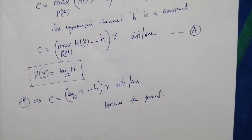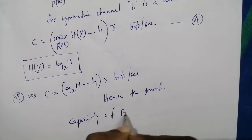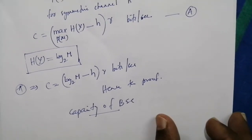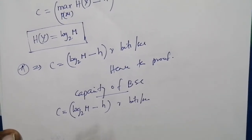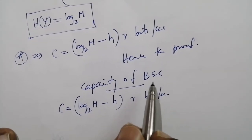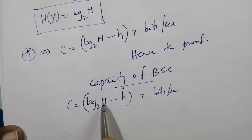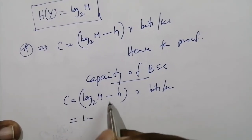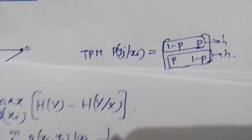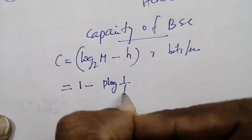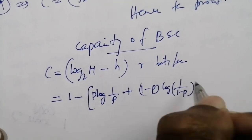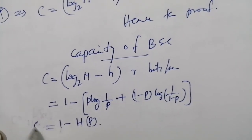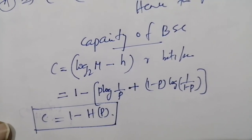Now we will calculate the capacity of the binary symmetric channel. We know that C equals log2(m) minus h, times r bits per second. For the binary symmetric channel there are two output symbols, so log2(2) = 1. Therefore C equals 1 minus h, where h equals p·log(1/p) + (1-p)·log(1/(1-p)). This can be written as C equals 1 minus Hb(p), the binary entropy function.